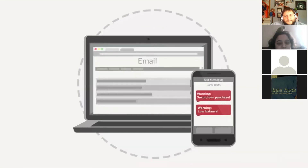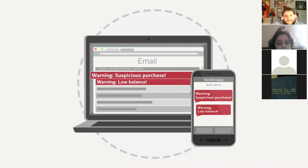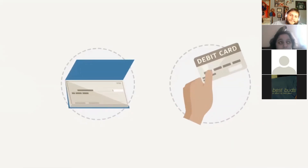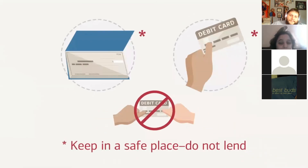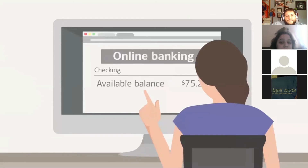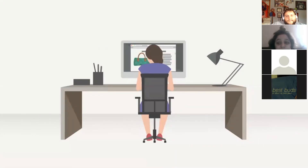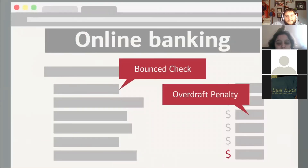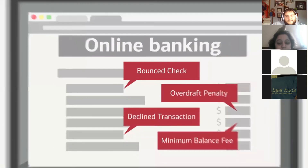Most banks offer online and mobile account access so your teen can check their account status at any time. Some accounts also have text and email alerts that can warn of suspicious purchases or low balances, which is helpful for a teen just getting used to managing money. When researching, take into account both features and fees. Once you sign up, your teen will receive a checkbook and debit card — keep these safe and don't lend them to anyone.